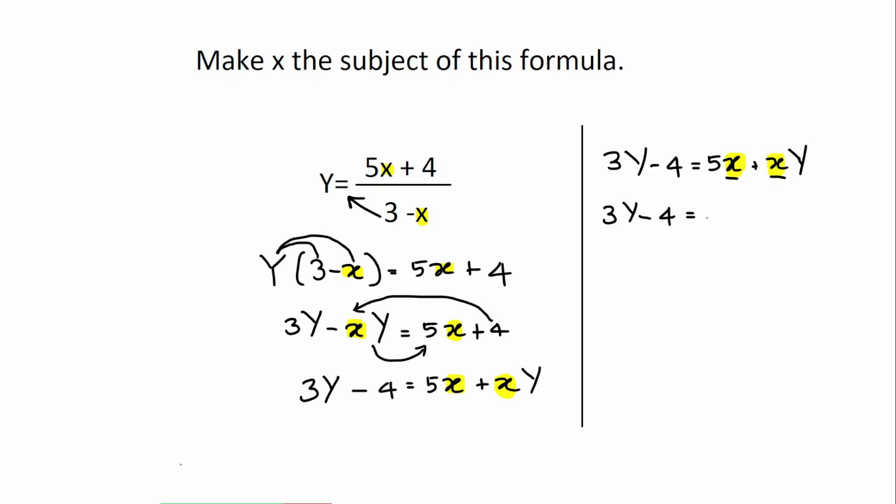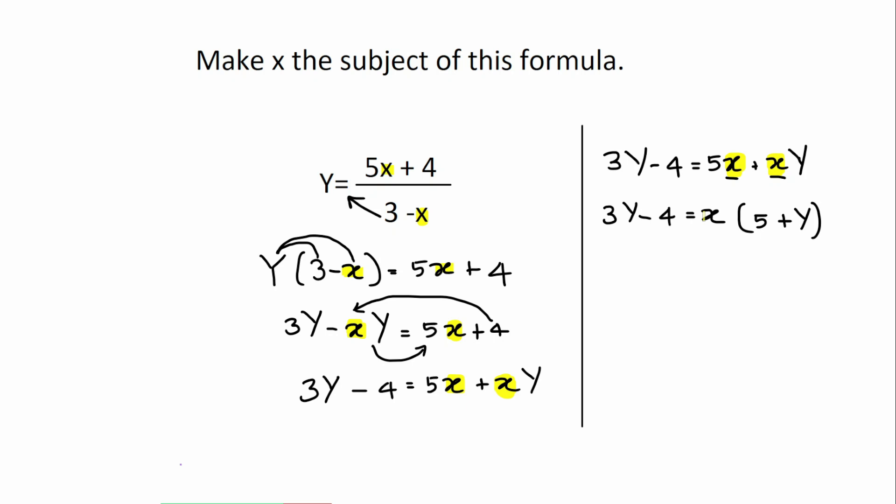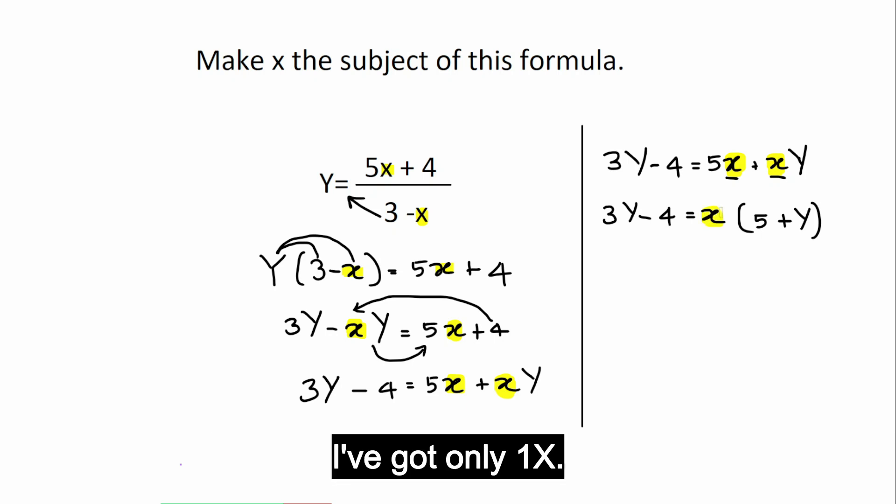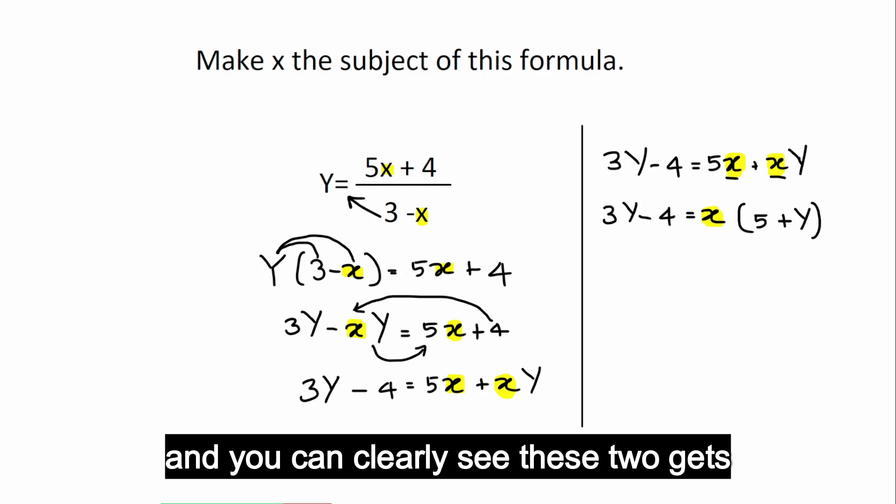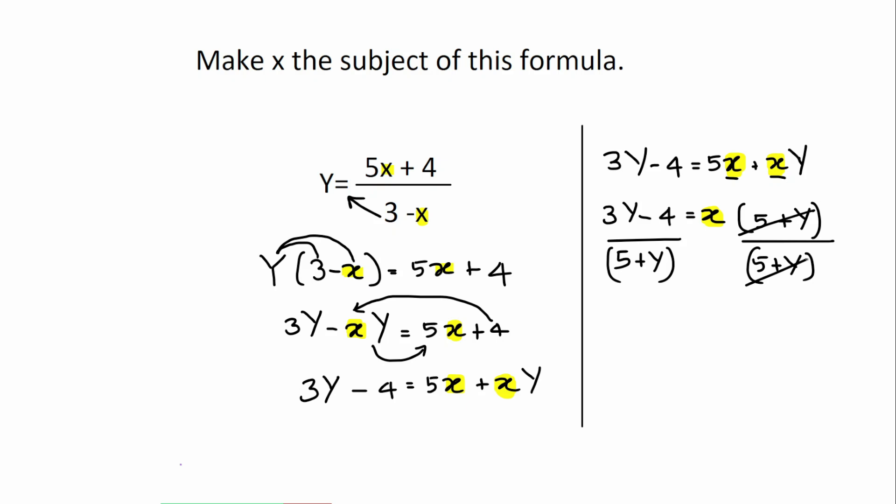So, I have 5 add y. You can see what happens. I have only 1x. All this time, until this step, I had 2x's. Now, I've got only 1x. Now it's very easy. I just divide both sides by 5 add capital Y. This side also, 5 add y. And you can clearly see, these 2 gets cancelled out. So, I can write x is equal to 3y take away 4 divided by 5 and y.